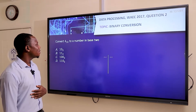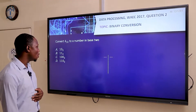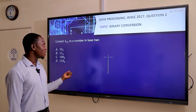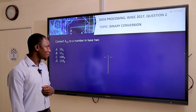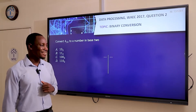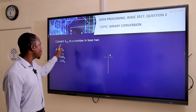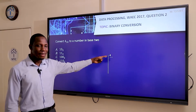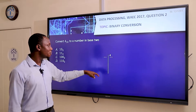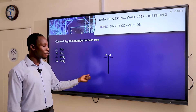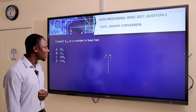Question two says: convert 4 in base 10 to a number in base 2. When we convert this, we need to apply some mathematical operations — but it's easy, don't be scared. We take 4 and divide it by 2. When we divide 4 by 2 we get 2, with no remainder, so the remainder is 0.